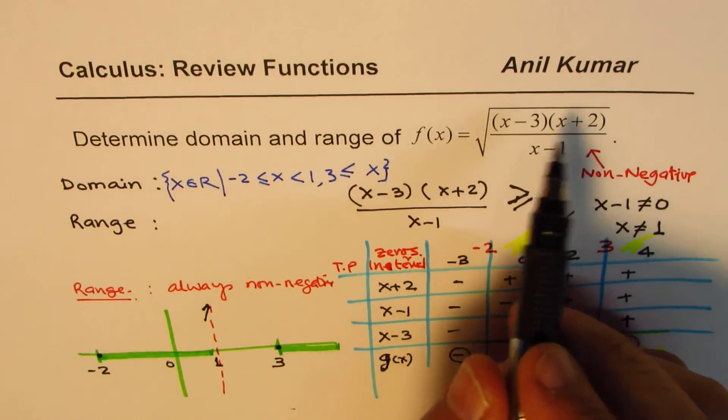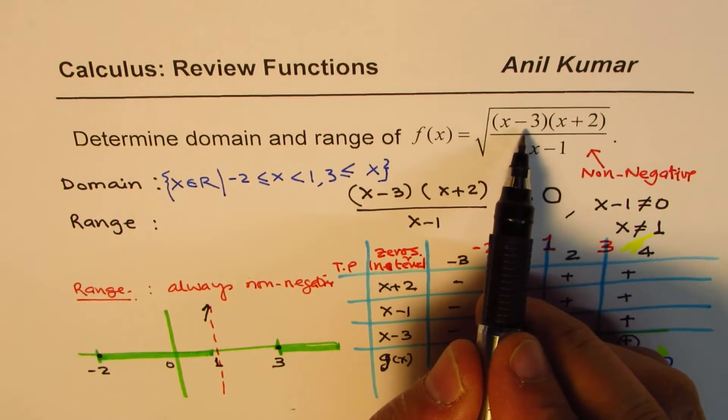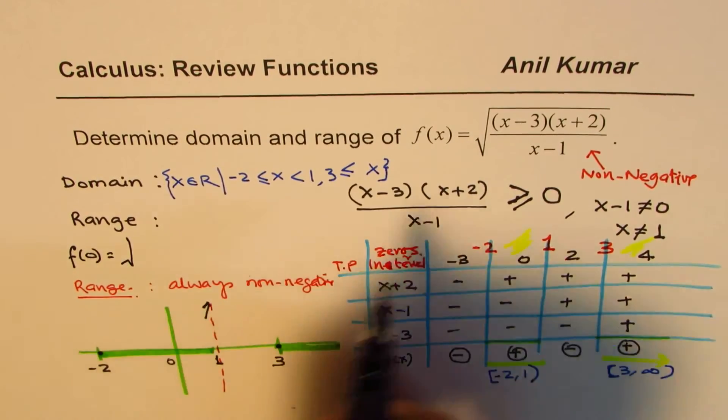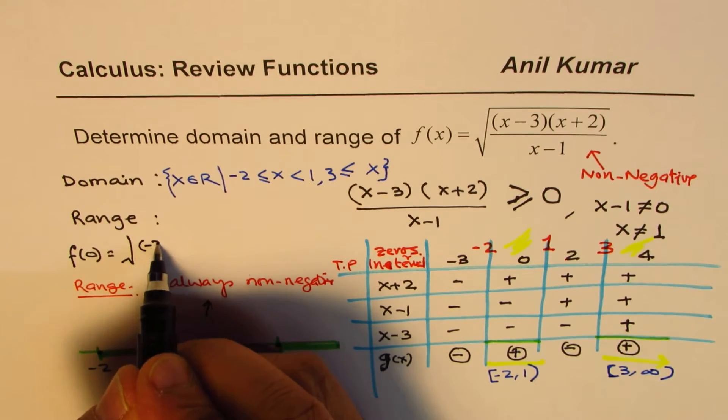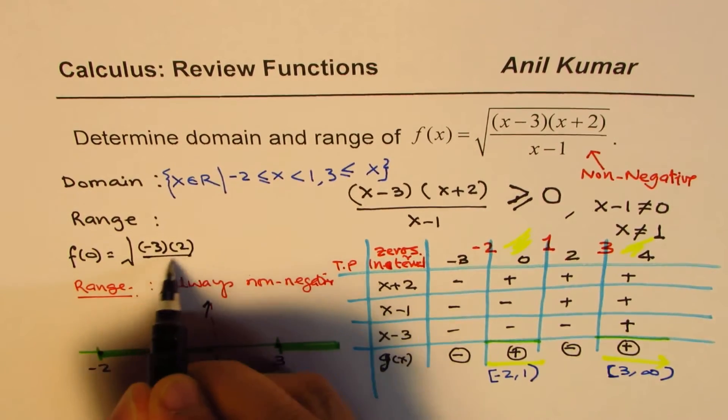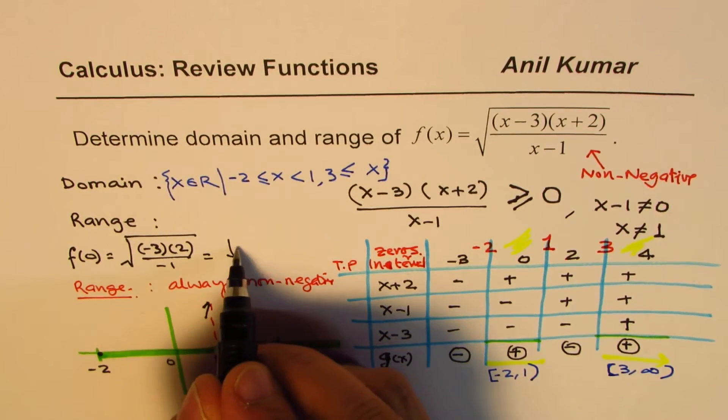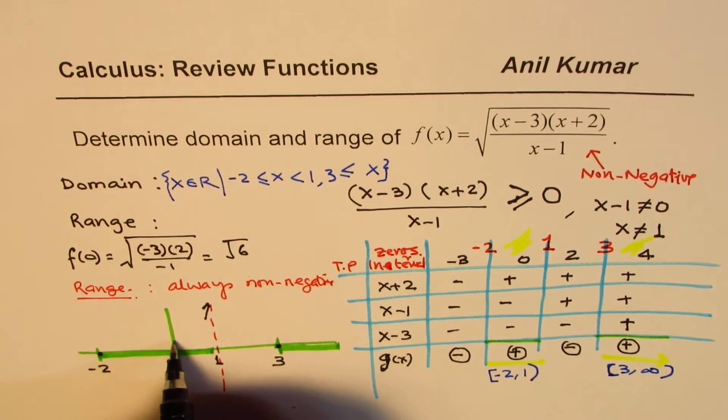To find a point here, we can substitute 0 here. 0 within the square root will give us, so let's find the value of this function at 0. That will give us square root of, if I write 0 here, minus 3 times 2 divided by minus 1. Which is square root of 6. So, we have a 0 here, square root of 6. So, we could say square root of 6 is the value, the y-intercept.